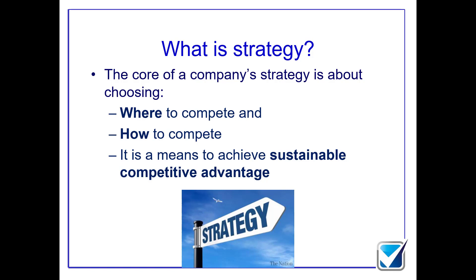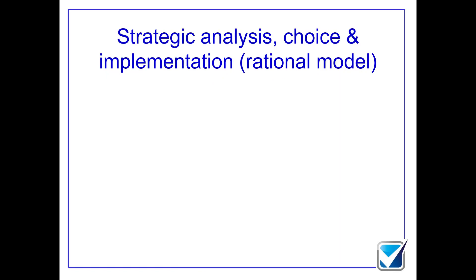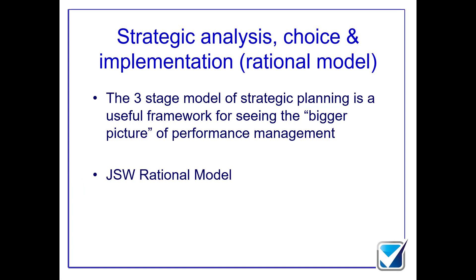How do we get to the stage of actually having a strategy and then getting it into place? What we have is what's known as a three-stage model of strategic planning, which is known as the JSW rational model. It's called the JSW model after the three management theorists that came up with it: Johnson, Scholes, and Whittington. These three came together and formed what we call the rational model — this is the first step when we start thinking about strategic planning. It's a wonderfully simple idea to have three different steps in our strategic planning.